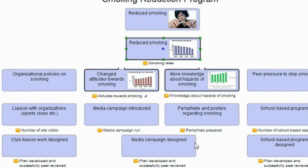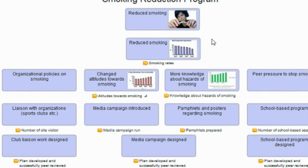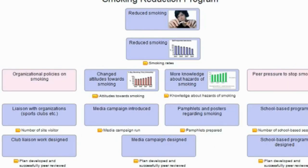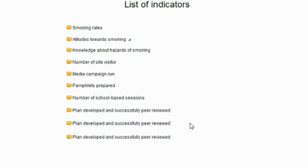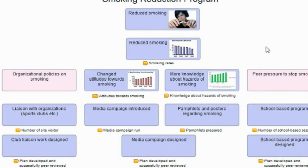What we can see immediately from this — because we've mapped these indicators back onto the visual model — is that there are two outcomes or steps which could be really important but have no indicators. Organizational policies on smoking and peer pressure to stop smoking currently have no indicators. This approach immediately alerts us in a way that a straight list does not. Clicking to a page that just lists the indicators, looking at that list gives you no idea of whether or not they're measuring the important things. Moving back to the visual model, we can clearly see the two steps within the model which don't have indicators, and we can consider whether we should develop indicators for them.